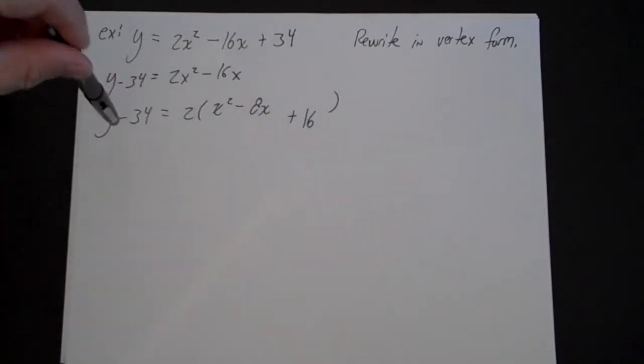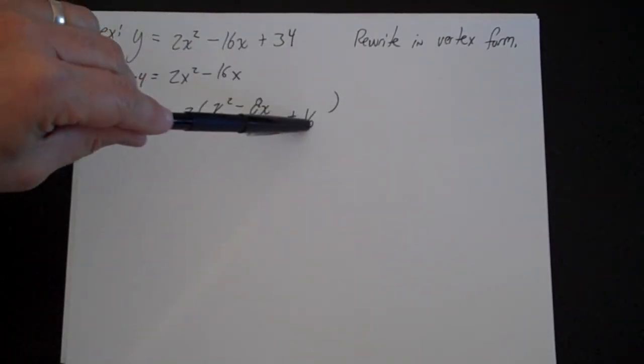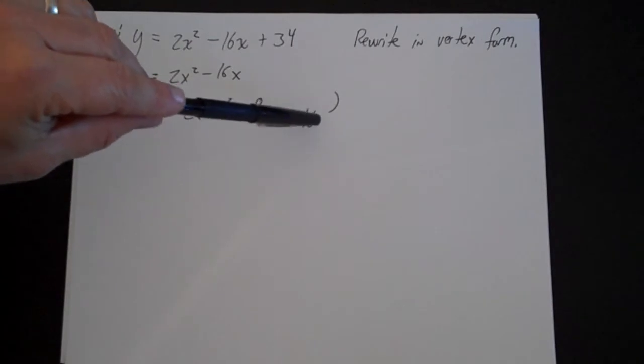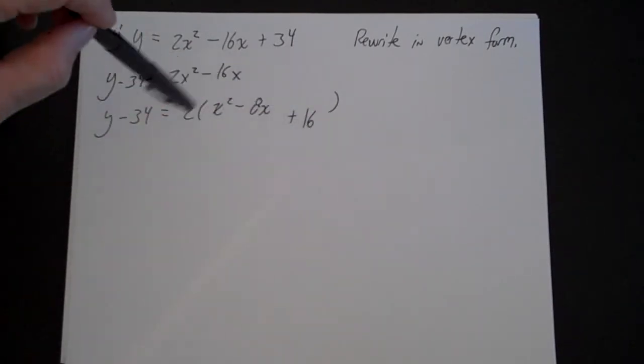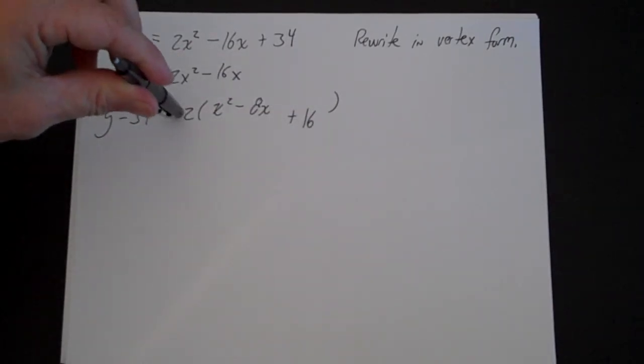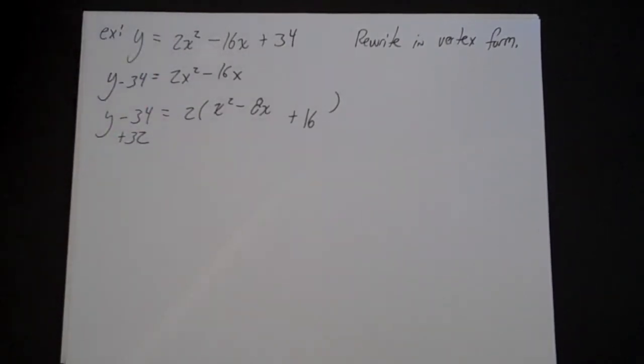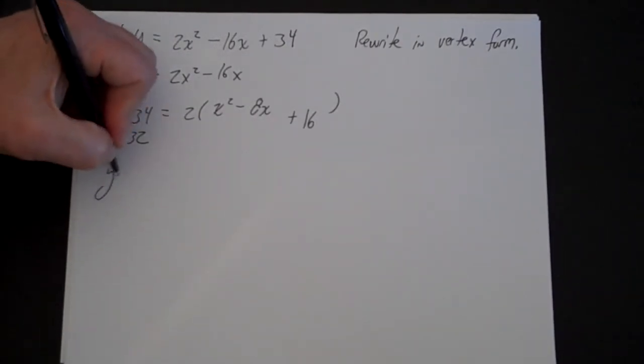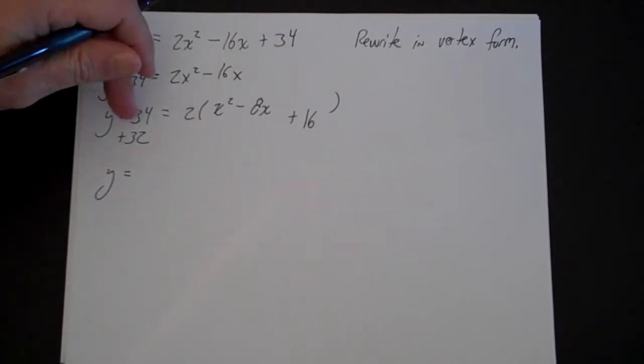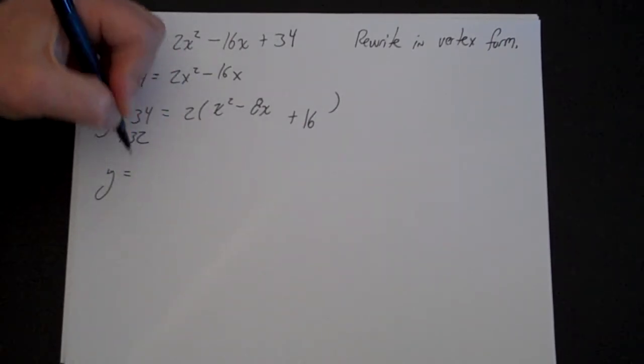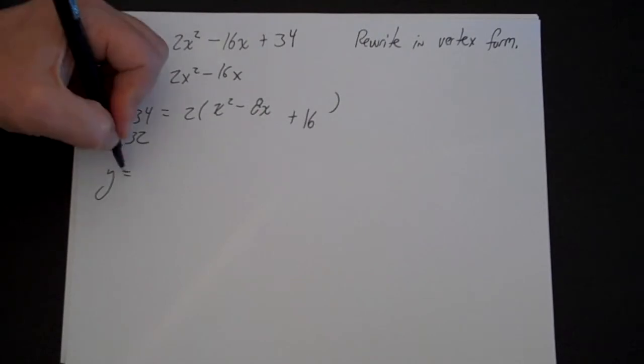Whatever I do to one side of the equation, I have to do to the other side. So this is 16, but it's really I'm adding not just 16, since it's inside the parentheses, I'm adding 16 times 2, so I'm really adding 32, so that means I have to add 32 to the other side. Minus 34 to positive 32 is going to be a positive 2.